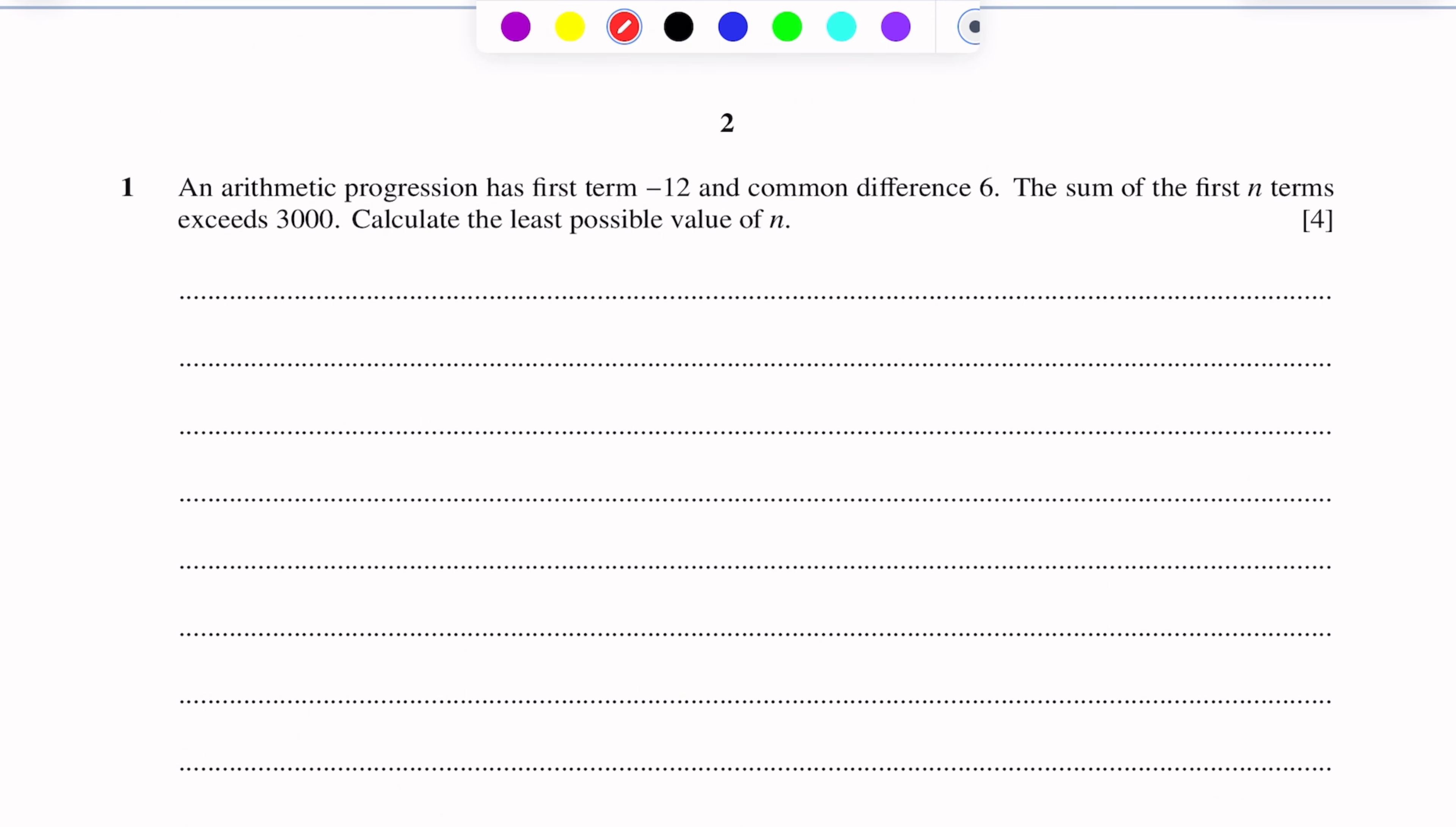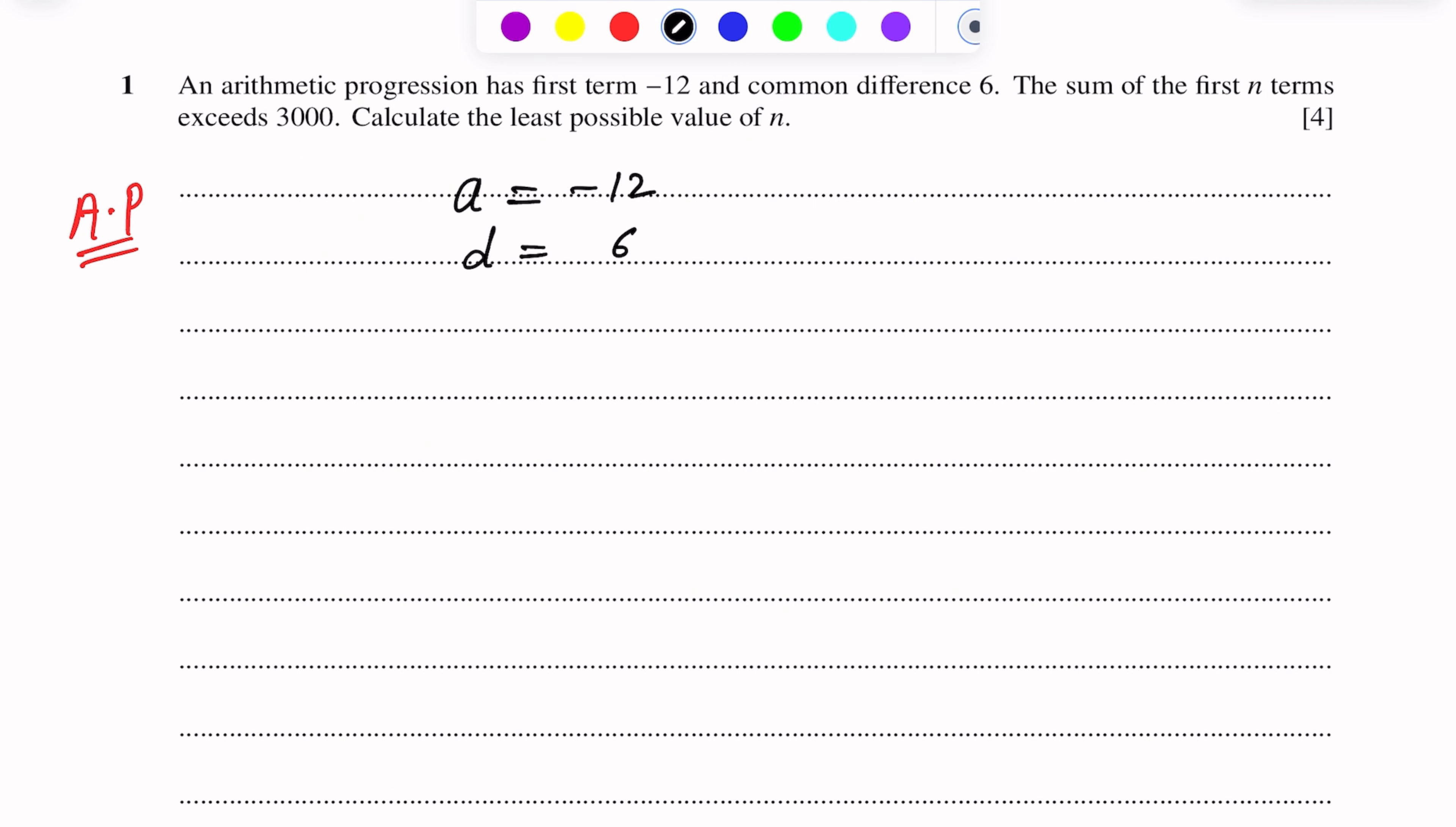This question is of arithmetic progression. First term is given, that is minus 12, and common difference of arithmetic sequence is 6. Sum of n terms exceeds 3000 means sum of n terms Sn greater than 3000. Now, Sn is equal to n over 2, 2a plus n minus 1 into d.